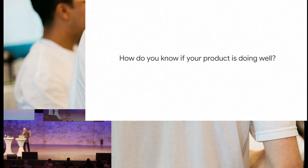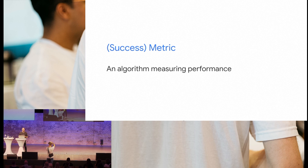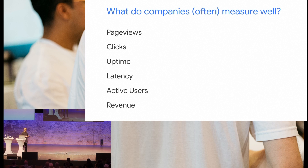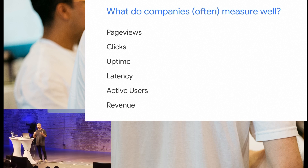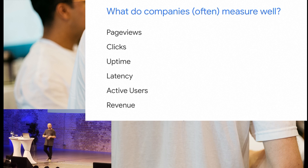When we are in the context of a product we're developing, we always want to know how well we're doing — hopefully through metrics, success metrics. A success metric is an algorithm that measures performance. Many companies measure things such as page views and clicks, whether the product is up and running, fast latency, number of users, whether we're making money. These are always measured and reviewed, perhaps in quarterly or monthly business reviews, to make sure everything is going well.